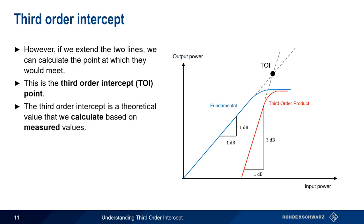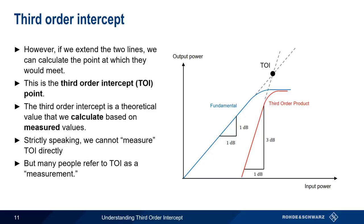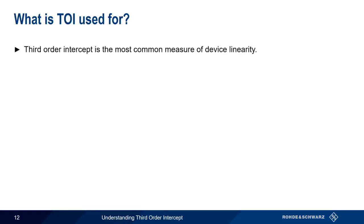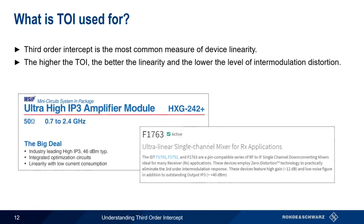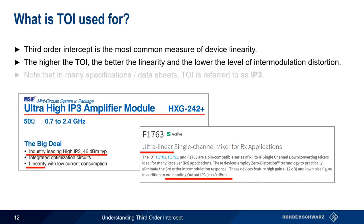We can't measure third-order intercept directly. That said, many people do refer to measuring the third-order intercept of a device. So why do we measure third-order intercept? Third-order intercept is the most common way to quantify the linearity of a device. Often we're very interested in knowing how linear a device is, and third-order intercept is a simple and reproducible way of measuring linearity. The higher the third-order intercept, the better the linearity of the device, and the lower the level of intermodulation distortion that device generates. Device manufacturers use third-order intercept in their specifications and data sheets as a measure of linearity, although in many cases you will also hear the abbreviation IP3 used to refer to third-order intercept.